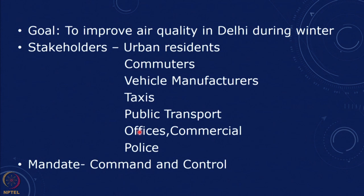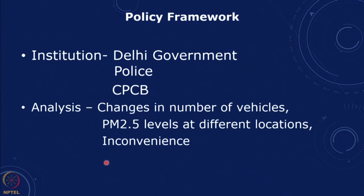The first stakeholder are urban residents, especially those living near roads. There are commuters, who may face more difficult commutes. Vehicle manufacturers are affected if different emission norms are specified. Taxis and public transport may see a spurt in usage. There can be an impact on offices, commercial establishments, and schools. The police implement what is essentially a command-and-control mandate based on legislation, and the pollution control board assesses the impact.